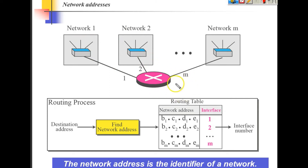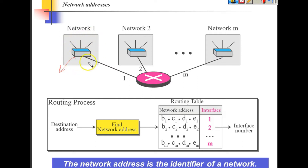The router has a table with information about these connected networks. The router only maintains information about the network, not all the hosts inside it — a network may have thousands of hosts, but the router only keeps a note of the network. Each network has its own identity called a network address, and this network address is listed in the router's routing table.